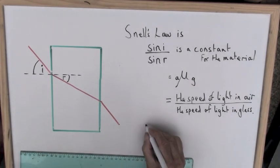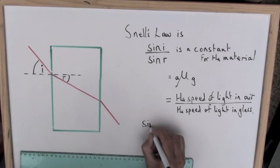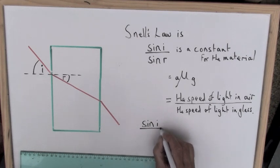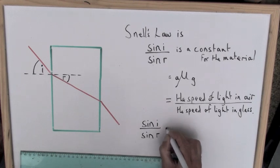Very quickly writing that in symbol form: sine i over sine r, the refractive index, is c, the speed of light in air, divided by c, the speed of light in glass.